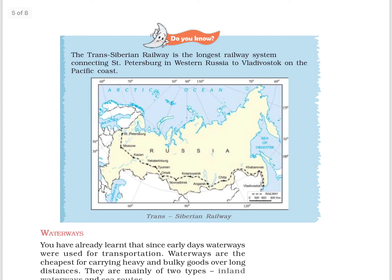The Trans-Siberian Railway is the longest railway system, connecting Saint Petersburg in western Russia to Vladivostok on the Pacific coast.